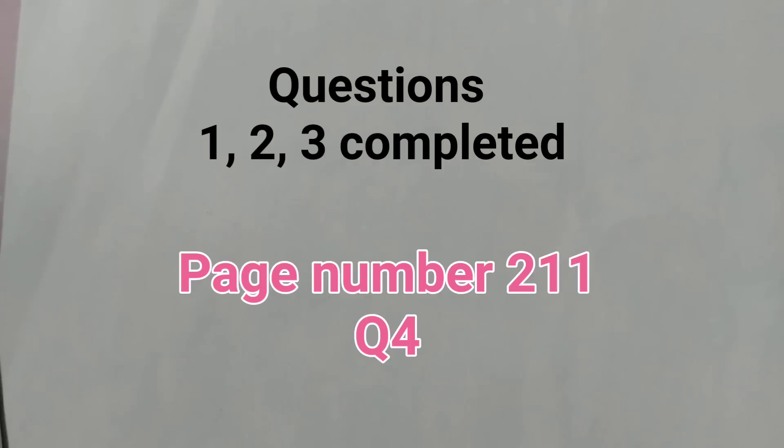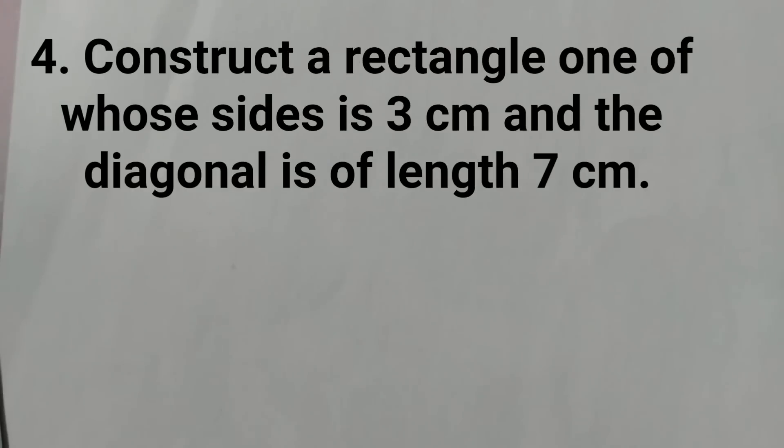We have already completed question number 1, 2, 3, and this is question number 4. Construct a rectangle one of whose sides is 3 cm and the diagonal is of length 7 cm. Side 3 cm, diagonal length 7 cm.